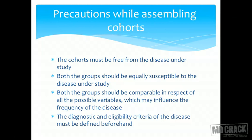Both groups should be comparable with respect to all possible variables that may influence disease frequency — all demographic and other variables should be equally distributed. The diagnostic and eligibility criteria for the disease must be defined beforehand. This is especially important because cohorts are long studies and disease definitions can get revised midway, such as updated definitions of hypertension or diabetes mellitus, which could invalidate the entire study.